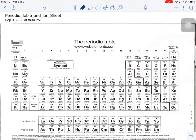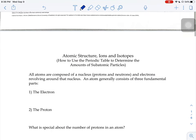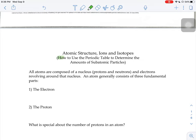What we're going to look at today is how you can tie together the periodic table and information about what the structure of an atom looks like. How do we use the periodic table to determine the amount of subatomic particles? The subatomic particles are those little particles that make up individual atoms. All atoms are composed of a nucleus, where the protons and neutrons are, and electrons revolving around that nucleus.